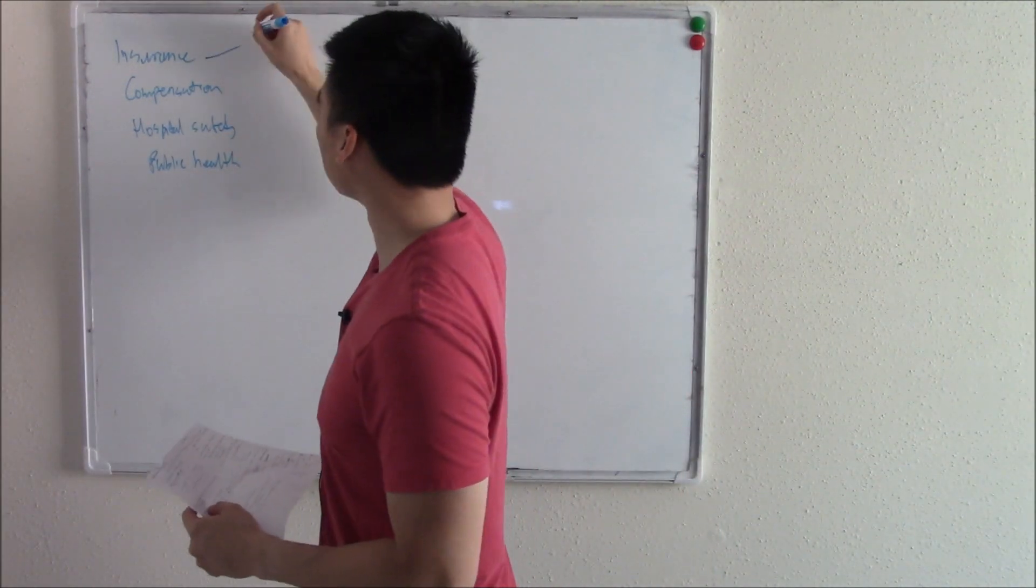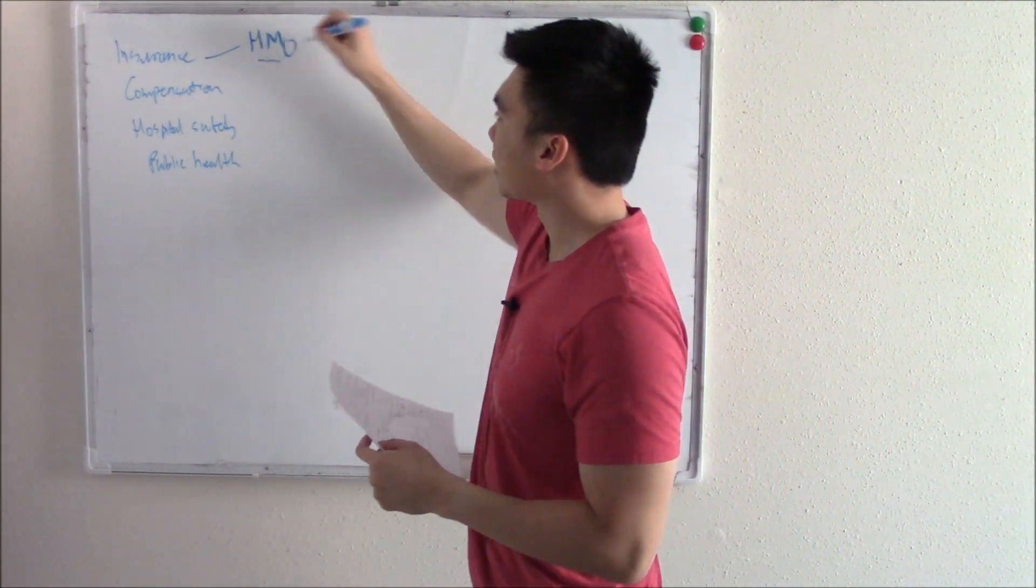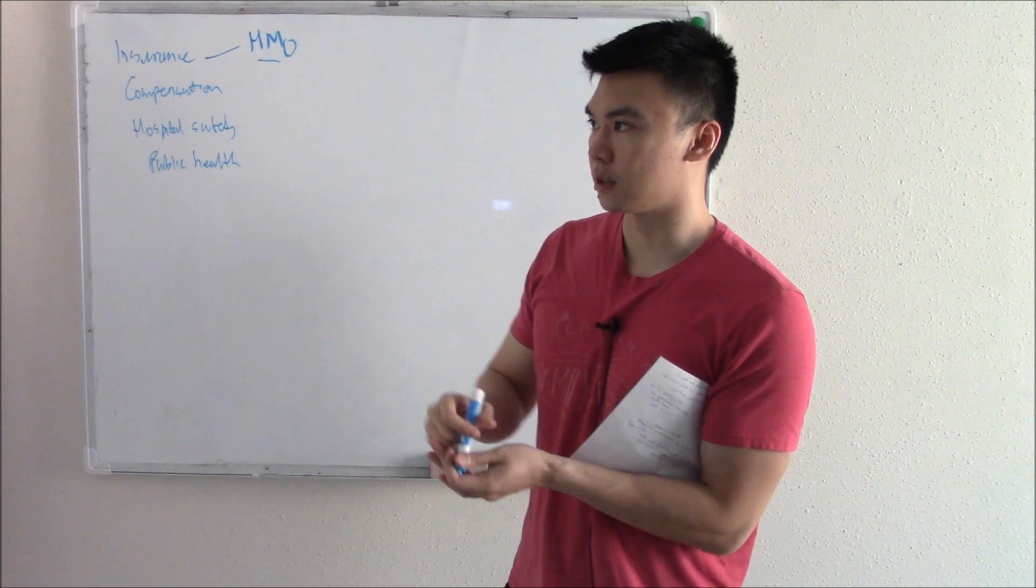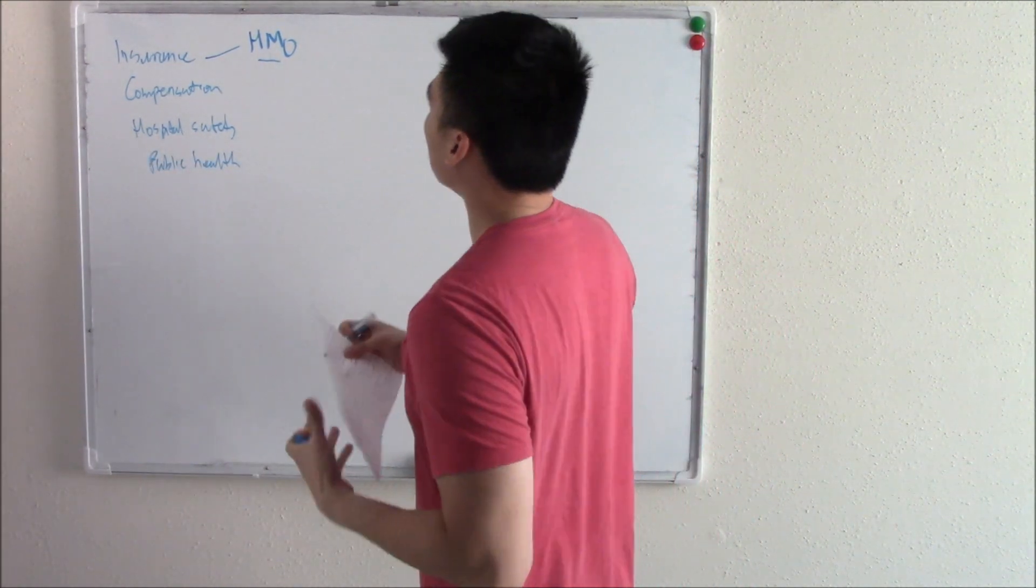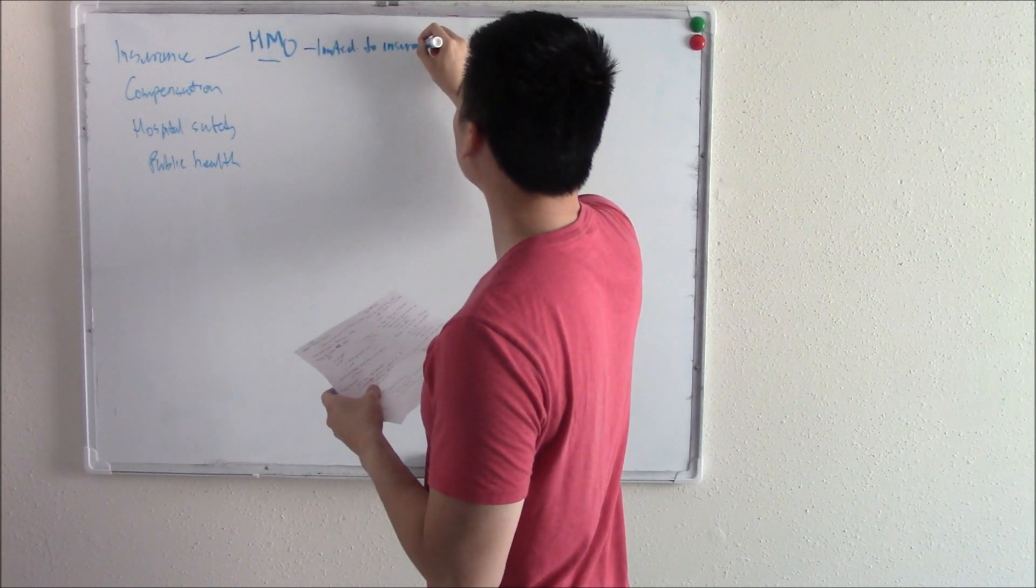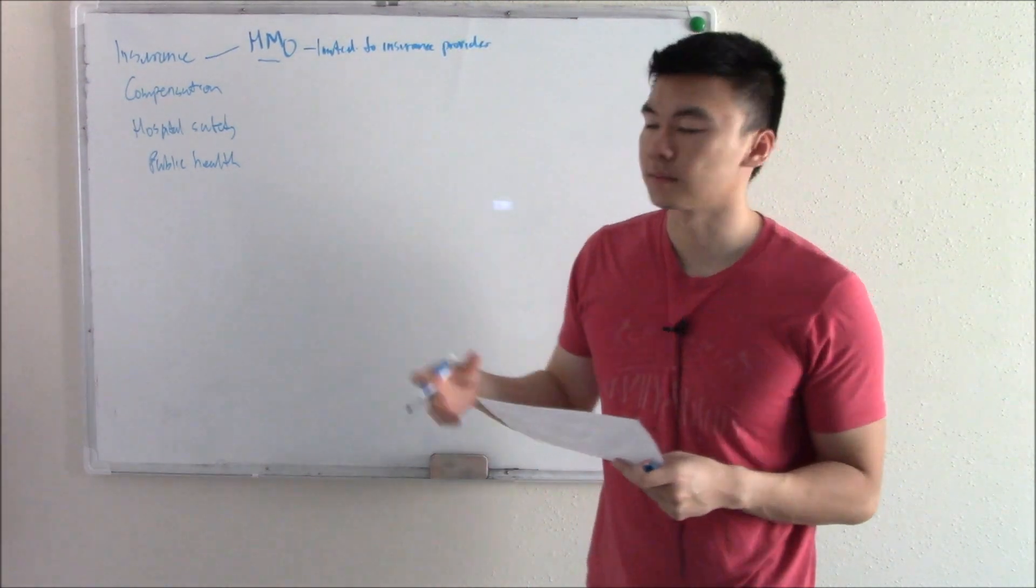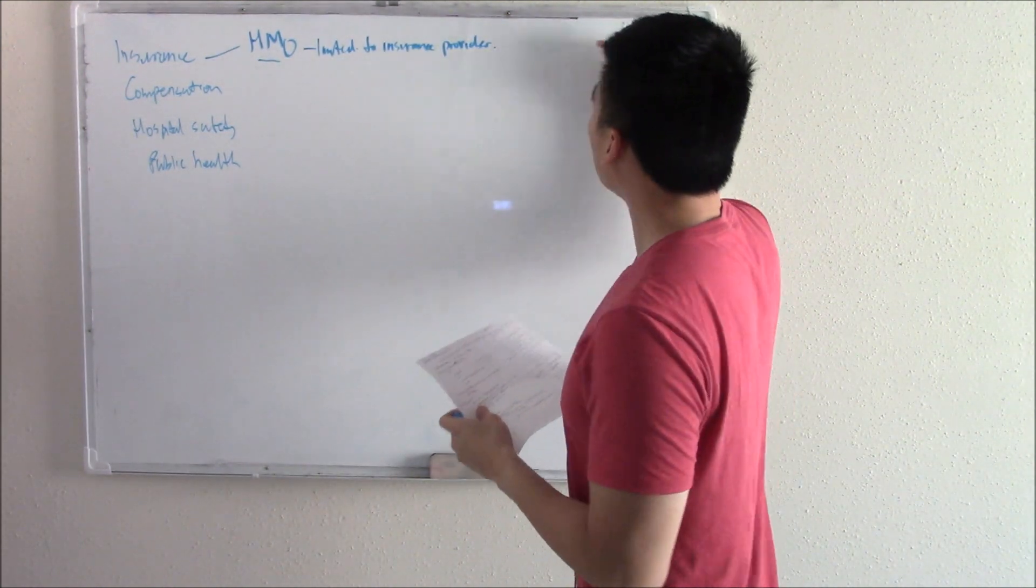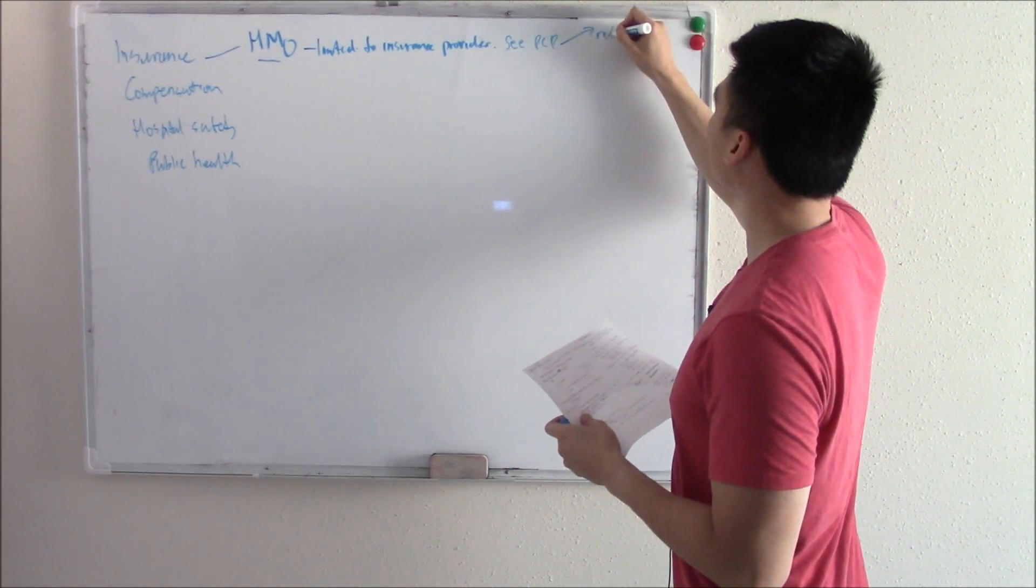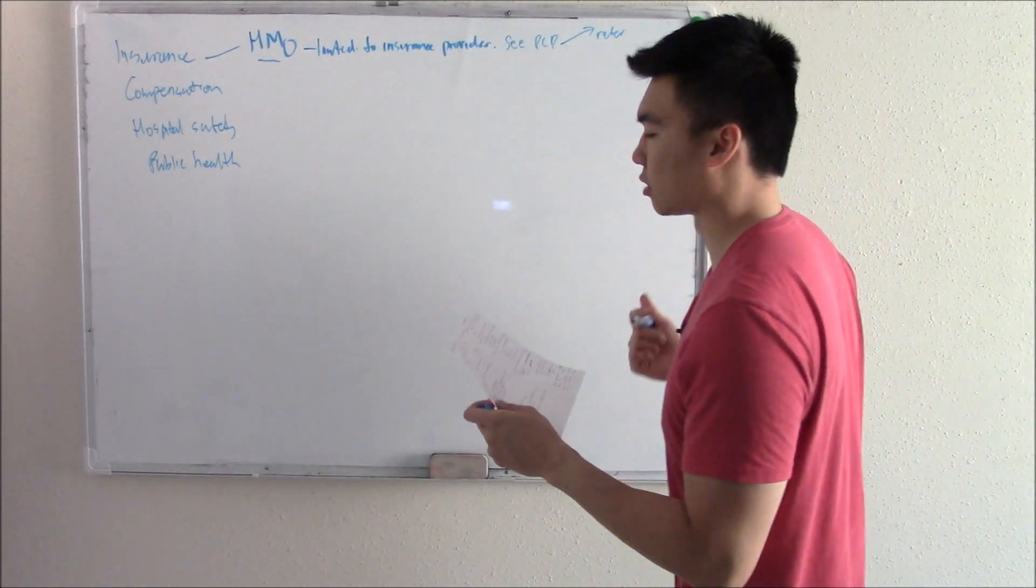Let's talk about insurance first. There are different types of insurance. There's HMO or healthcare maintenance organization. With HMO insurance, you are given insurance and then you're limited to doctors that take that insurance. I'll write limited to insurance provider. If you have Kaiser HMO insurance then you can only see Kaiser physicians. You see your PCP and if you need a referral that PCP will refer you to whatever. If you need to see a gastroenterologist, you see your PCP first and that PCP will refer you to gastroenterologist.